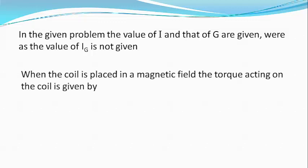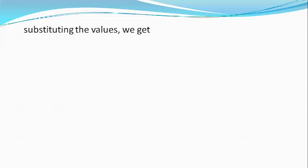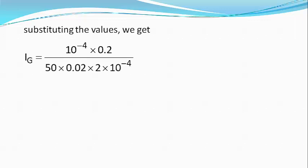When the coil is placed in a magnetic field of induction B, the torque experienced by the coil is given by: τ = N × B × A × IG = K × θ, so IG = Kθ / (N × B × A). Substituting the values: IG = (10⁻⁴ × 0.2) / (50 × 0.02 × 2 × 10⁻⁴) = 0.1 amperes.